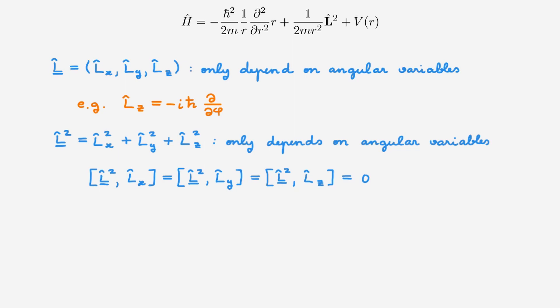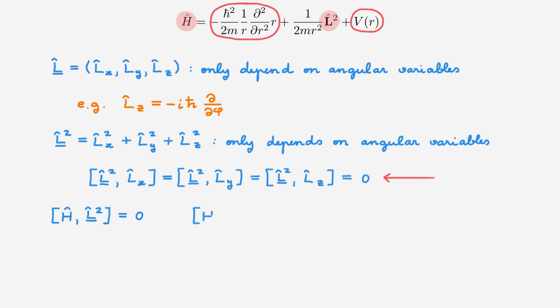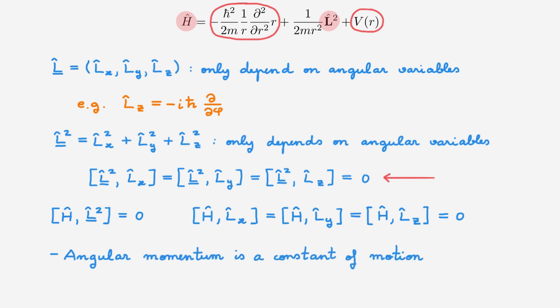The key observation is that orbital angular momentum operators only depend on the angular variables and do not depend on the radial variable r. This means that any angular momentum operator will commute with any term that only depends on r. Looking at the Hamiltonian, the first term and the third term only depend on r, so any angular momentum operator commutes with both of them. On top of this, the second term is proportional to L², and since L² commutes with itself, the full Hamiltonian commutes with L². Since the components of L also commute with L², the full Hamiltonian commutes with every component of L. We know that any operator commuting with the Hamiltonian is a constant of motion, so the angular momentum is a constant of motion for particles moving in central potentials.